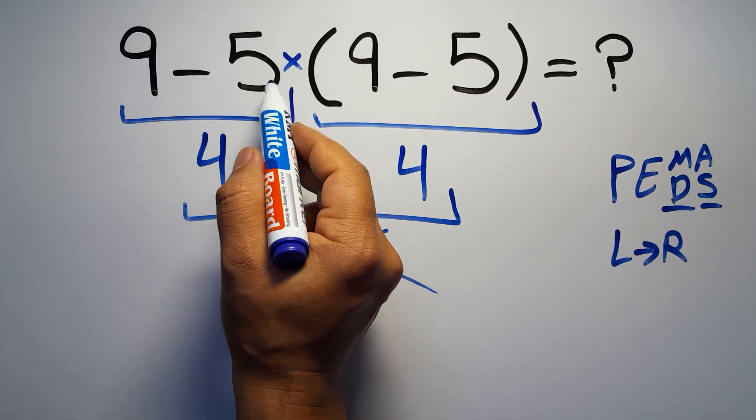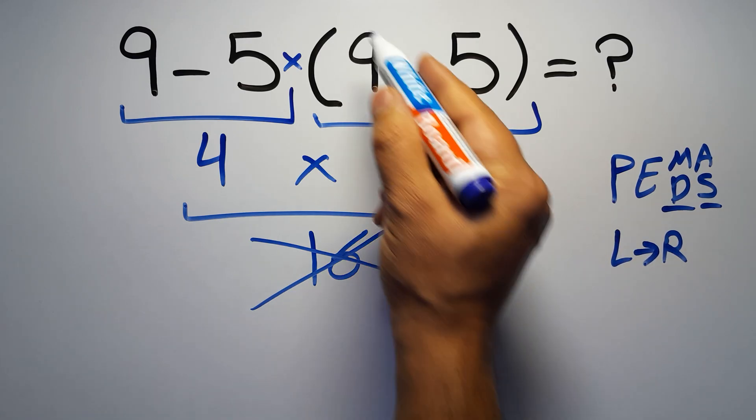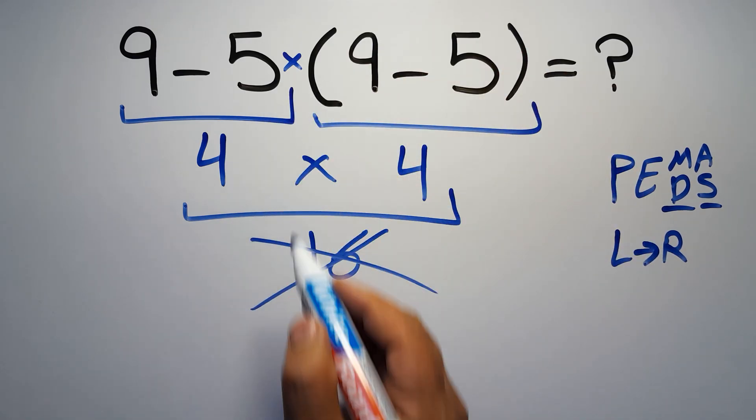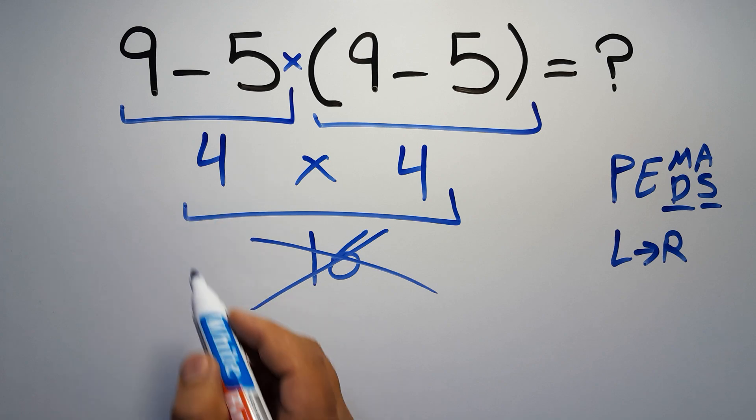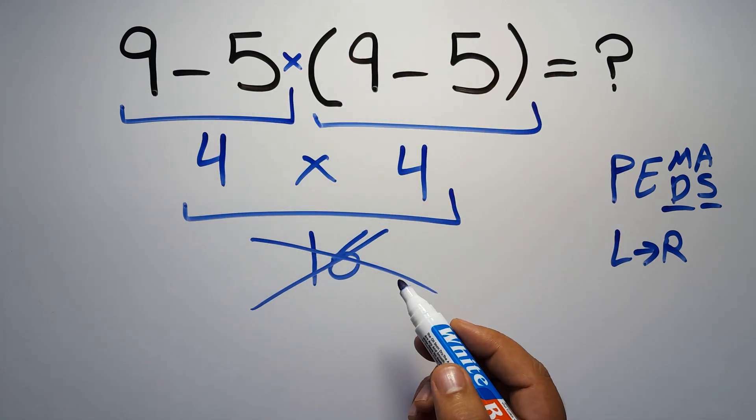And we usually don't write the multiplication sign for brevity. So according to PEMDAS, first we have to do this parentheses. Then this multiplication and finally this subtraction. If we do this subtraction before this multiplication or this parentheses it is wrong.